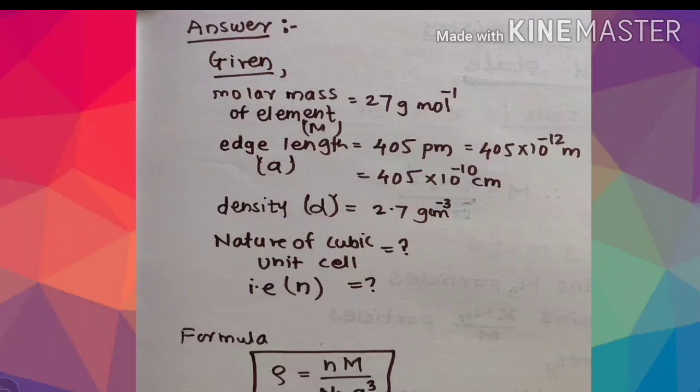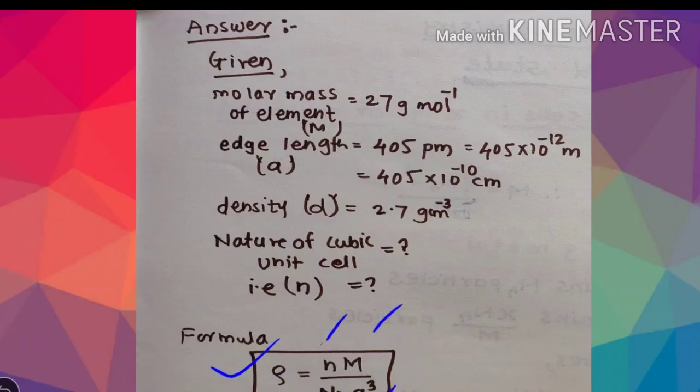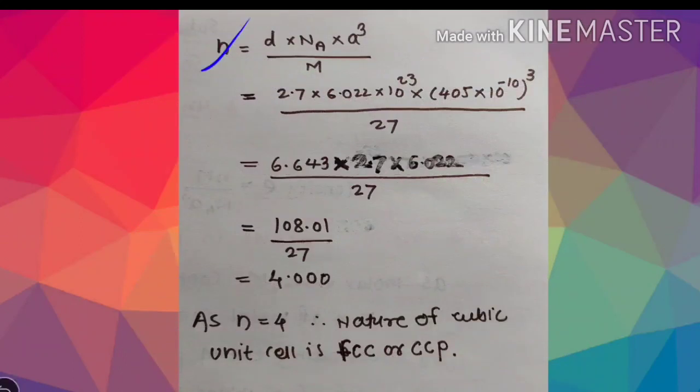Using the formula ρ = n × M / (N_A × a³), rearrange to get n. Density is given as 2.7, Avogadro's number N_A is 6.022 × 10²³, edge length a is 405 × 10⁻¹⁰ raised to cube, and molar mass M is 27 grams per mole.